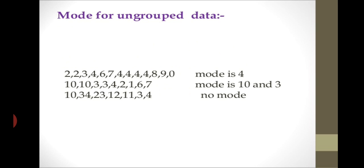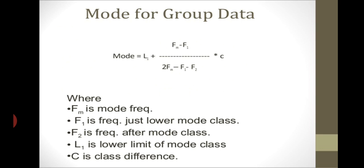The given data is 2, 2, 3, 4, 6, 7. Let's calculate the mode of this data — which values are repeated and how many times. We can see that 2 appears multiple times, and 4 also appears multiple times. Those repeated values are the mode of our data.